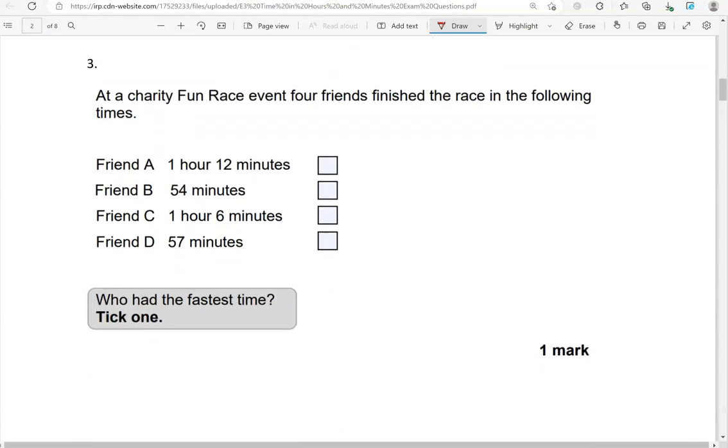At a charity Fun Race event, four friends finished the race in the following times. Friend A: 1 hour 12 minutes. Friend B: 54 minutes. Friend C: 1 hour 6 minutes. Friend D: 57 minutes. Who had the fastest time? Tick one. Friend A and Friend C took over 1 hour, so they're not the fastest. We're going to focus on Friend B and Friend D. Friend B took 54 minutes and Friend D took 57 minutes. 54 is smaller than 57, so we're going to tick Friend B because they completed the race in the shortest time.